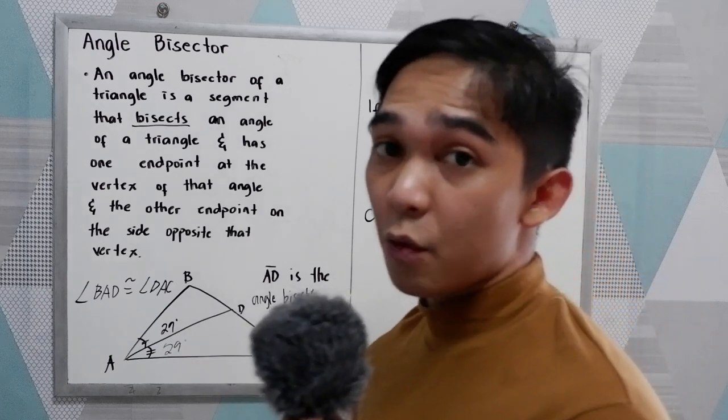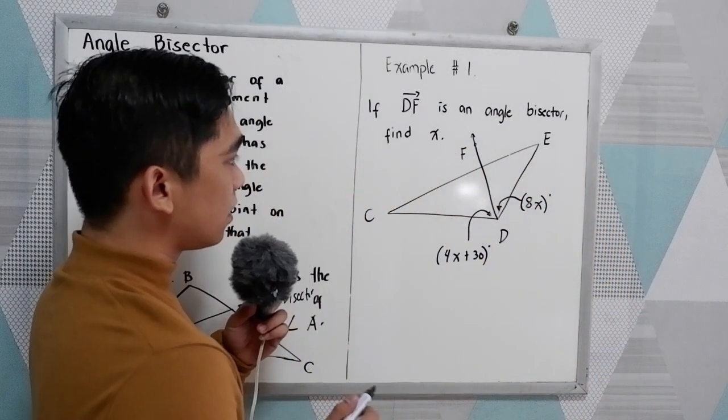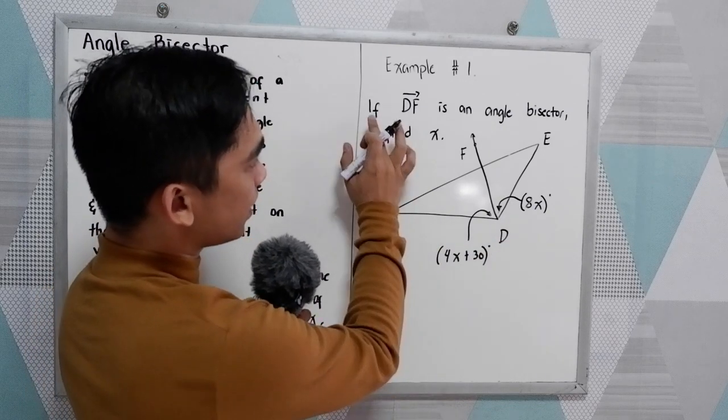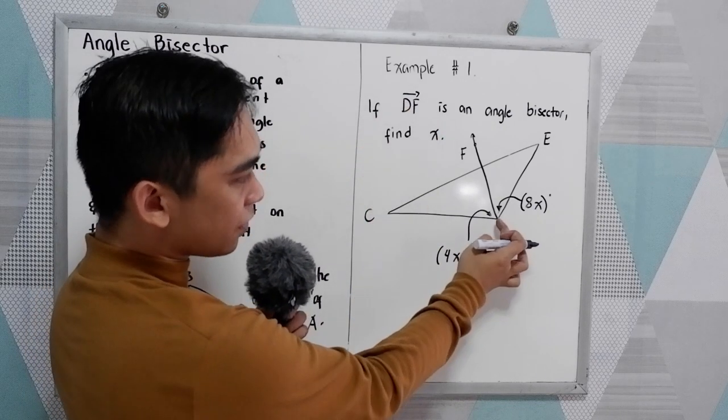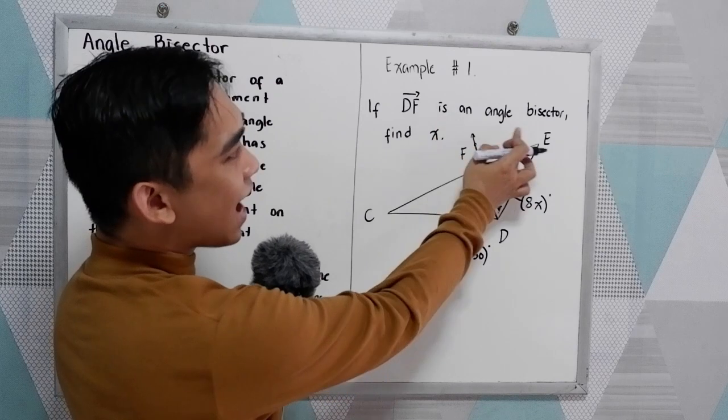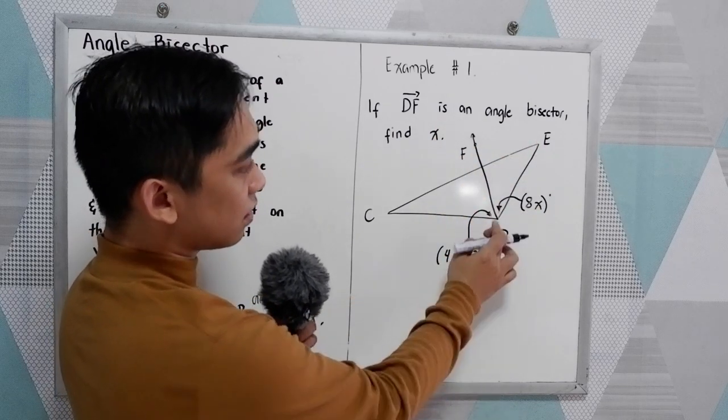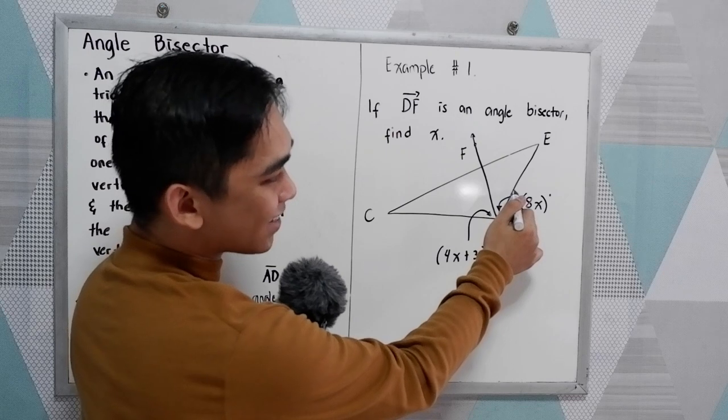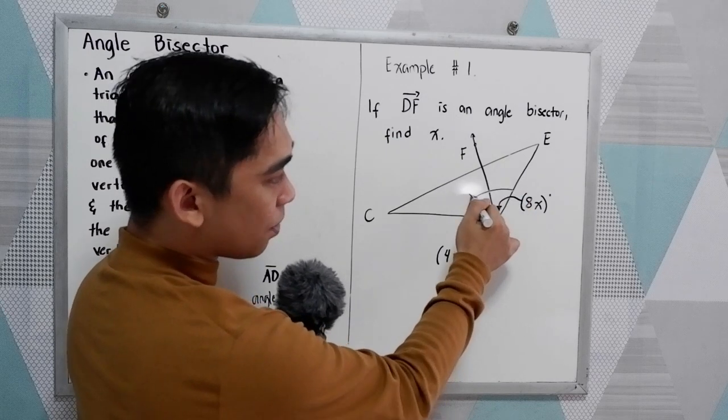Now let's have our example number one. In our illustration, if ray DF is an angle bisector, that means it divides the angle into two equal parts.